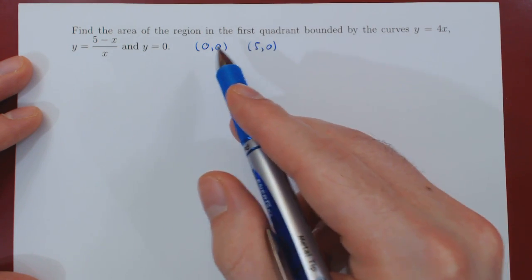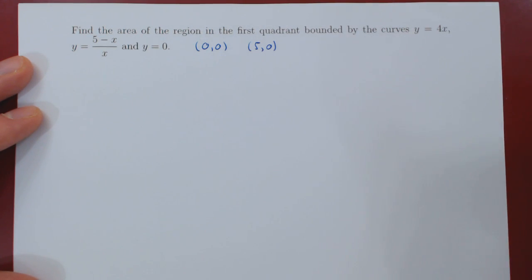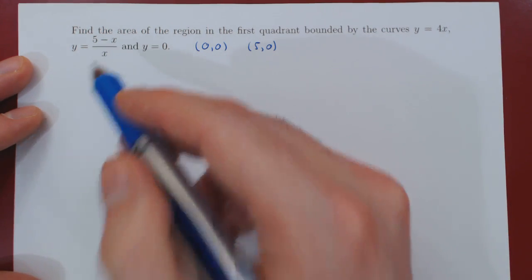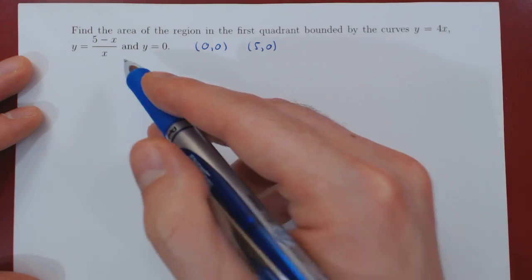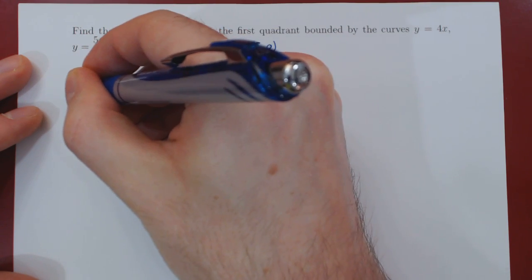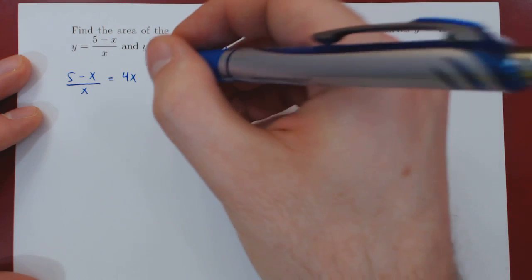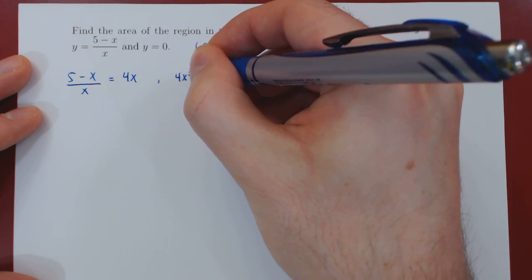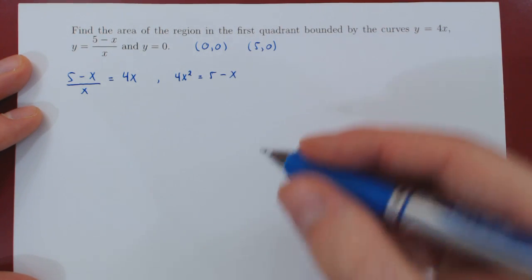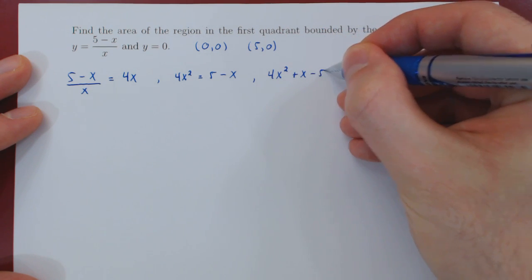These are very easy points of intersection to find. The remaining points of intersection are going to be more interesting between the curve 4x and 5 minus x over x. So let's equate both and solve for x. The first step is multiply by x, so you get 4x squared equals 5 minus x. Send these two terms on the left hand side, and you get 4x squared plus x minus 5 equals 0.